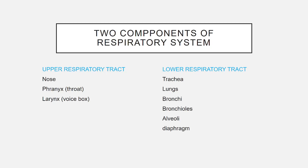There are two components of the respiratory system. The first is the upper respiratory system, which includes the nose, pharynx or throat, larynx, and voice box. The second is the lower respiratory system, which includes the trachea, lungs, bronchi, bronchioles, alveoli, and diaphragm.